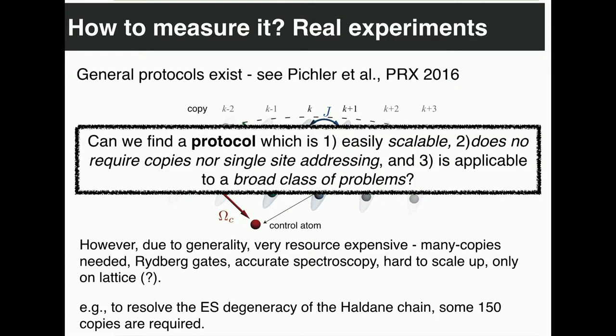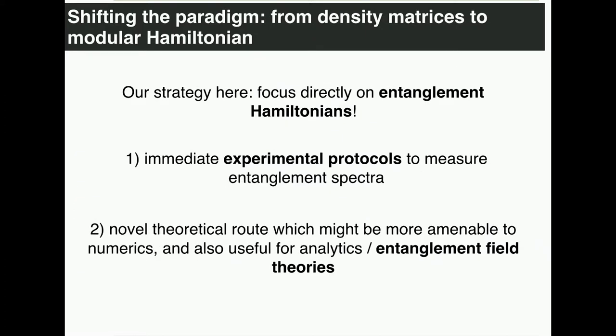Our goal is to do something different — something which is easily scalable, does not require copies, can be applied in any dimensionality, does not require single-site addressing at all, and is applicable to a broader class of problems. Maybe not to all possible reduced density matrices, but to a large class of those — in particular, for ground state problems. And this is exactly what I will show you in the following. We focus directly on entanglement Hamiltonians and discuss concrete experimental protocols to measure the entanglement spectrum.